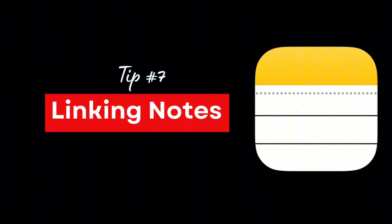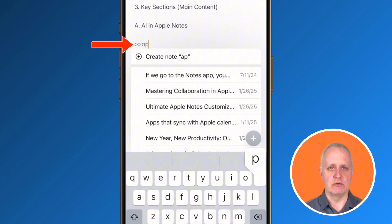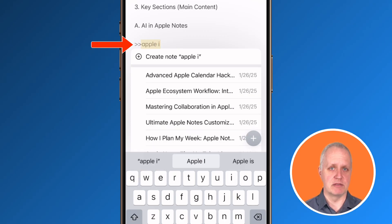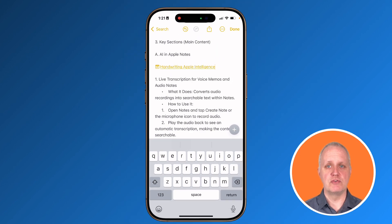Now imagine creating your own personal business knowledge hub where every related idea or resource is just a tap away. That's the power of note linking. It's easy to link notes together. Open the note you want to add a link to, and type two greater than symbols, and then the title of the note to link. Once you choose the existing note, or you can also create a new note, that's it.